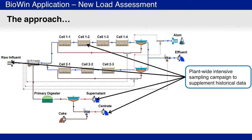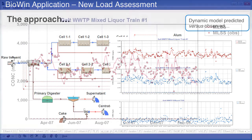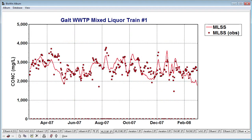After setting up the Biowind flow sheet and incorporating all operational aspects, the model was calibrated to one year of time-varying performance data. In order to accomplish this, a supplemental plant sampling campaign was conducted to augment the existing data set. Minor adjustments were made until the model predictions matched the observed plant responses for a variety of parameters. For example, here we see the predicted mixed liquor suspended solids concentrations as a solid line and the observed values shown as points.